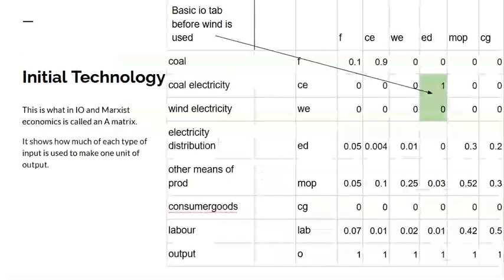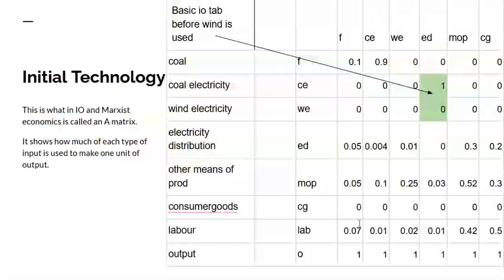This is obviously a highly aggregated system, and I'm starting off with what's called the A matrix in input-output economics or Marxist economics. Basically this shows how much of each type of unit is used to make one unit of output of that product. So if we go down these columns — F (fossil fuel/coal), CE (coal electricity), WE (wind electricity), ED (electricity distribution), etc. — you see that the output in each case is one.